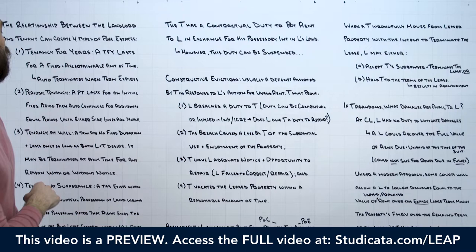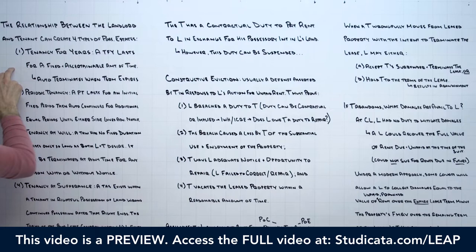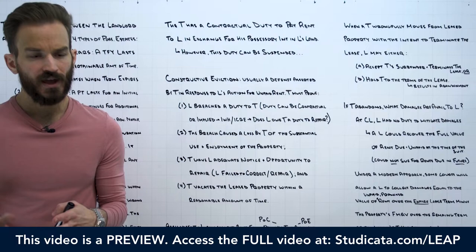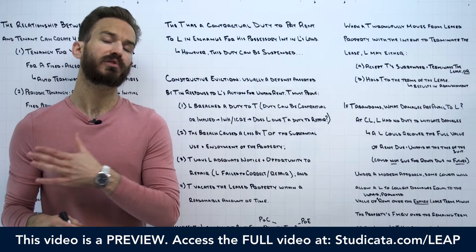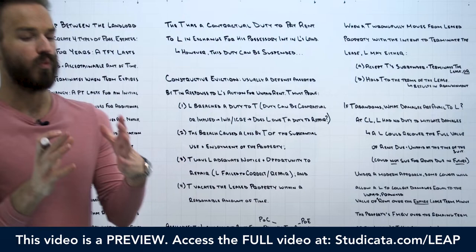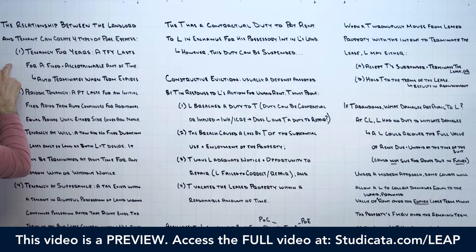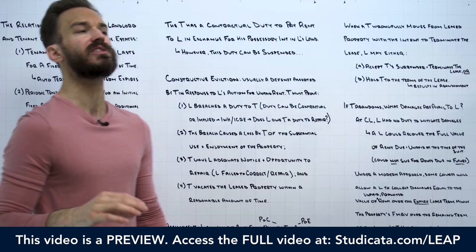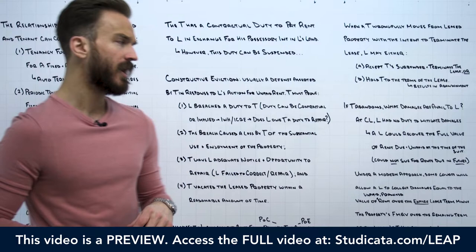Important to recognize that as long as it's an ascertainable amount of time, it's still a tenancy for years. For example, if you enter into a lease agreement that says upon completion of construction you will enter into a lease term for six months — that is still ascertainable, and therefore still a tenancy for years. We can ascertain when construction is completed and count six months from that point. The tenancy for years is probably the most classic form of tenancy between landlord and tenant.